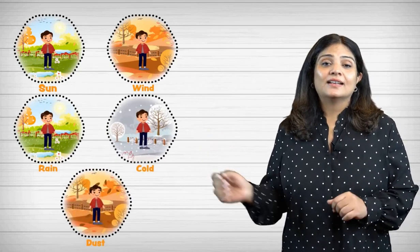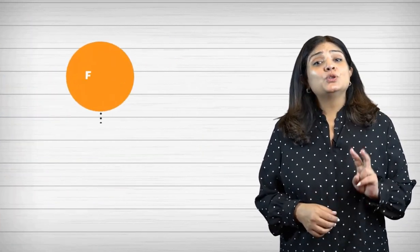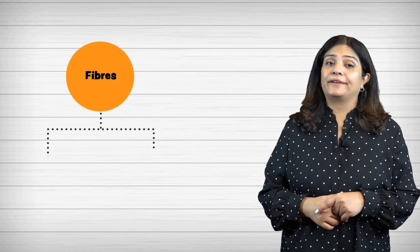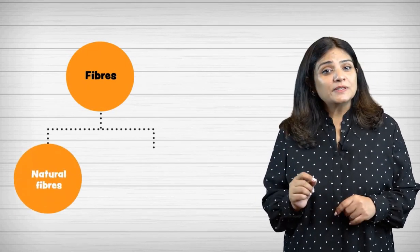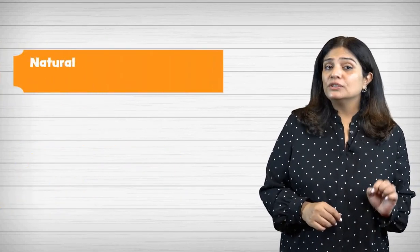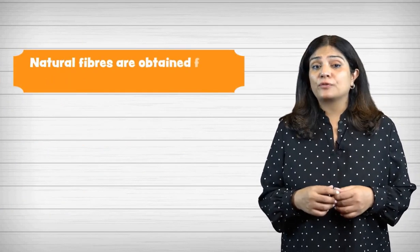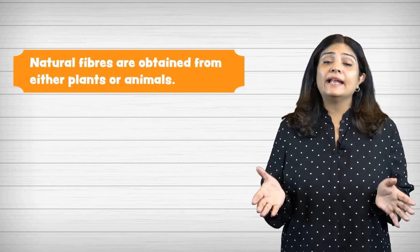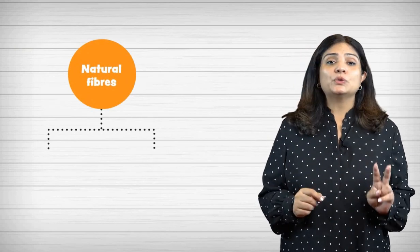Clothes protect our body from the sun, wind, rain, cold, and dust. There are mainly two types of fibers with which clothes are made: natural fibers and human-made fibers. Natural fibers are obtained from either plants or animals.